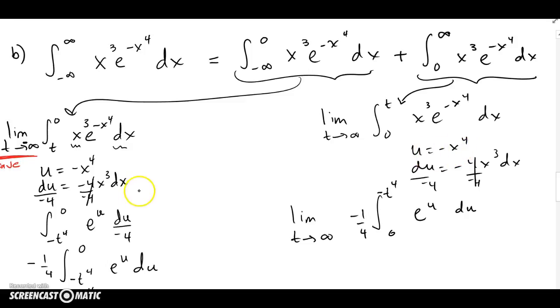And I have my integrand, then I'm just going to do a u sub like I did over here. And I have e^u, du, from when x is 0, the u's are 0, and when x is t, then the u's end up being -t^4. So let's go ahead and evaluate this.